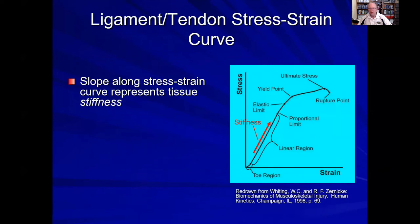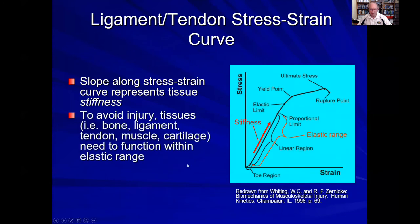Looking closely at the stress-strain curve of ligament and tendon, the slope of the line in the elastic or linear region is known as stiffness. A more vertical line indicates a stiffer material; a more horizontal line indicates a more compliant material — stiffness and compliance are opposites. As our bodies function during the day, as ligaments, tendons, and cartilage are loaded and unloaded, we want these materials to function within the elastic or linear range of the stress-strain curve so they do not undergo permanent deformation and injury.